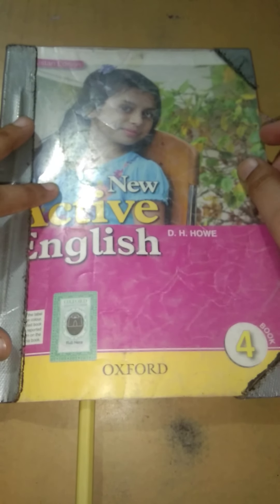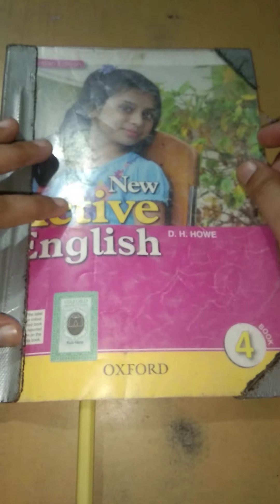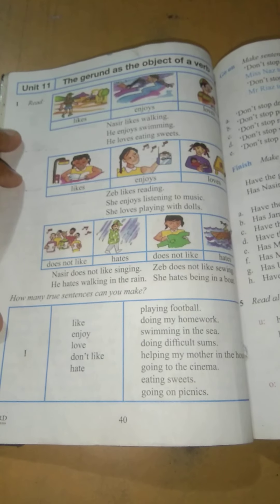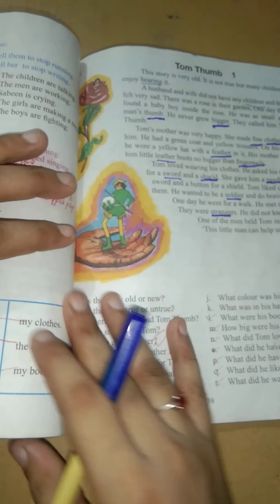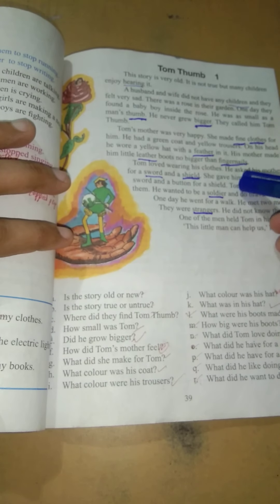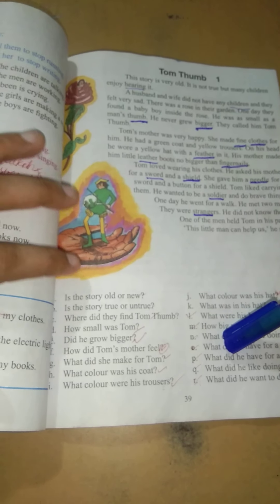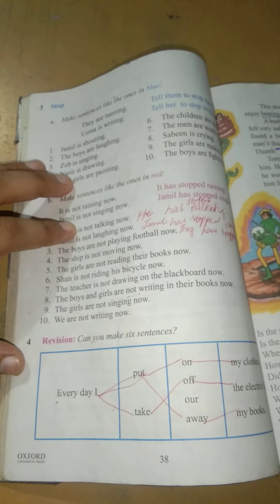Assalamu alaikum students. As you know, we have completed unit number 10. Today we will start unit number 11. In a previous video we studied the story Tom Thumb — we read the story, underlined difficult words, and I hope you have made sentences and question answers in your notebook. Today we will start the new unit, unit number 11, which is the last unit of your syllabus.